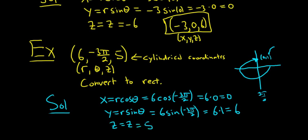So the final answer is the ordered triple (x, y, z), which would be x is 0, y is 6, and z is 5. And that is the final answer. I hope this video has been helpful. That's it.